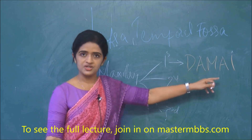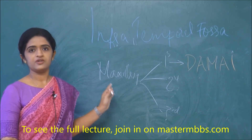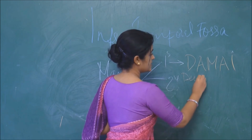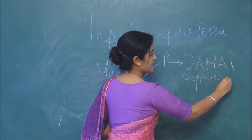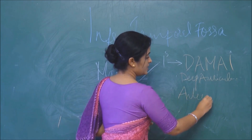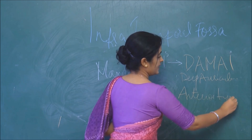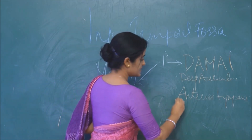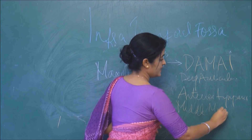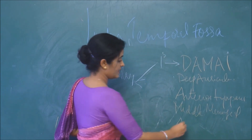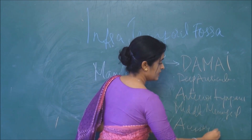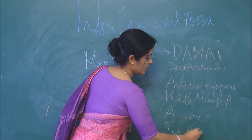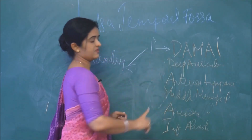According to this mnemonic, we will expand the branches of the first part of maxillary artery in order of their origin. D stands for deep auricular branch, A stands for anterior tympanic, M stands for middle meningeal, A stands for accessory middle meningeal, and I stands for inferior alveolar. So these are the branches arising from the first part.